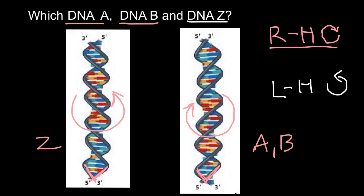Clockwise direction means this is going to be DNA A or DNA B. The difference between DNA A and B is that DNA A would have more turns for the same fragment and would be a little bit wider than DNA B. I hope with this video I clarified all the confusion about left-handed DNA, right-handed DNA, and clockwise and counterclockwise rotation of DNA. That's all for today — thank you for your attention. Please subscribe, share this video with your classmates, and see you in the next video. Goodbye!